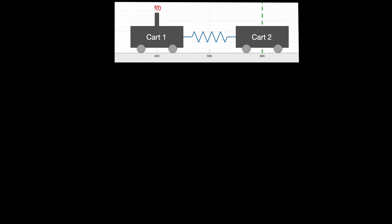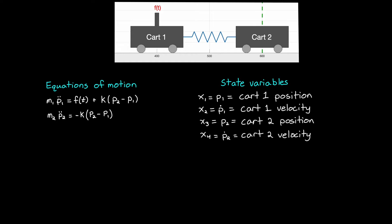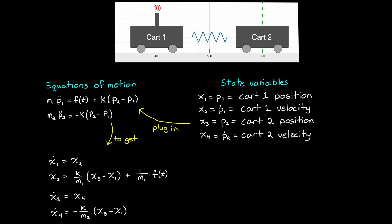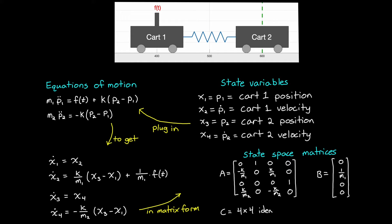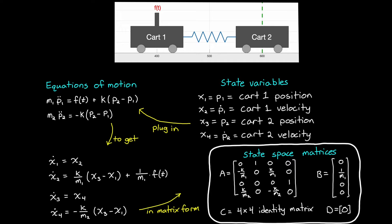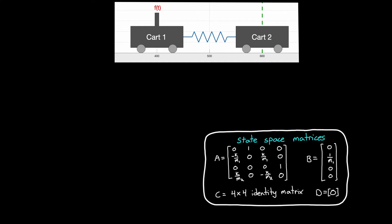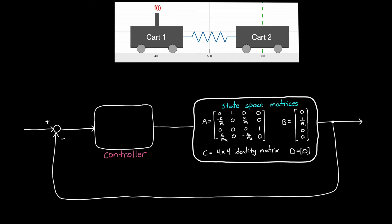We can build a linear model of the system dynamics using first principles. We start with the equations of motion and define four state variables: cart one position and velocity, and cart two position and velocity. We rewrite the equations of motion in state form and repackage into state space matrices — the A, B, C, and D matrices. We then use this model to develop a feedback control system to drive the position of the second cart to the set point, using full state feedback with gains chosen by LQR. Let's go to MATLAB to see how this is done.